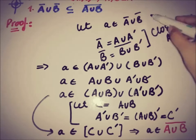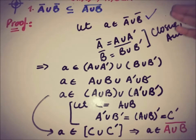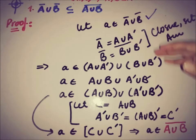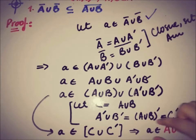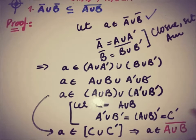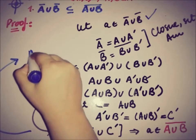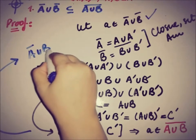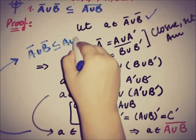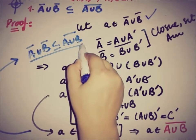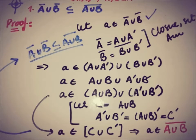Initially we picked a point 'a' from A closure union B closure, and by using the relation of the closure of a set and the set of accumulation points, we proved that 'a' is also a member of A union B closure. This implies that A closure union B closure is a subset of A union B closure. This is our first part, and we have proved it.